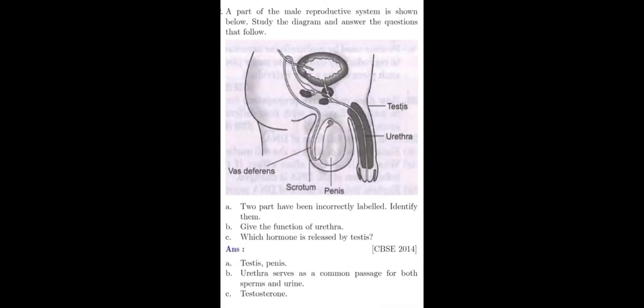Here is the answer. The two parts that are incorrectly labeled here are testis and penis. The penis is marked testis and the testis is marked penis. So these two are incorrectly marked parts. Second question, the function of urethra. Urethra is the common passage for both sperms and urine. Question 3, the hormone secreted and released by the testis is testosterone.